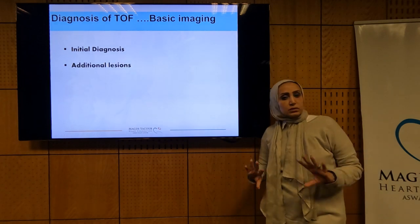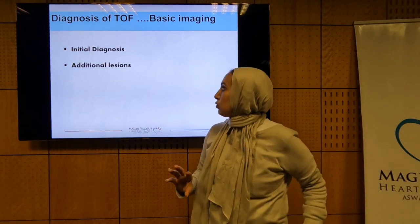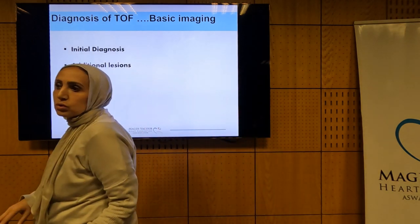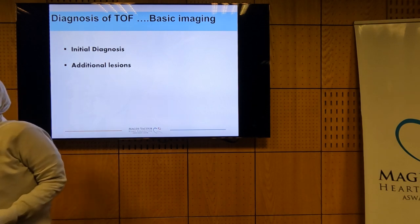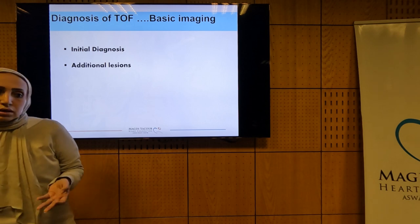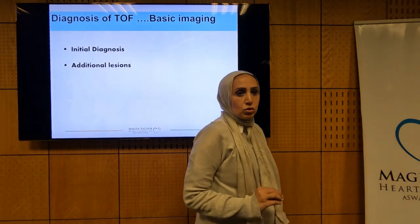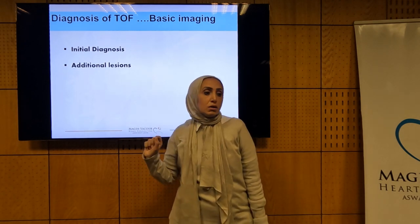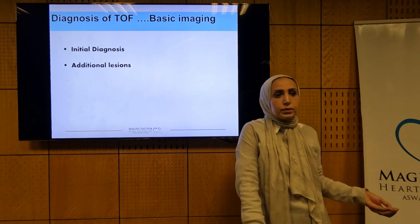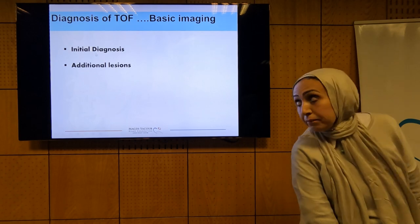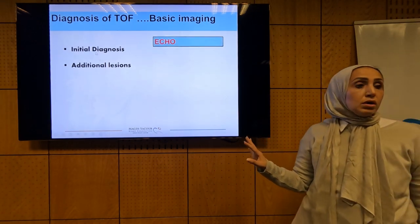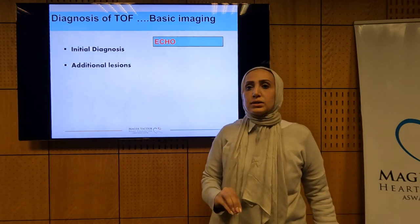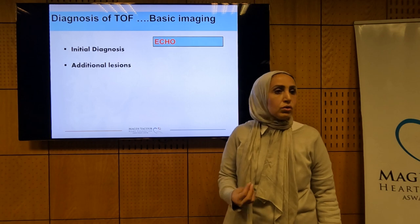Now moving to how to diagnose Tetralogy of Fallot. The initial diagnosis requires demonstrating the anterocephalic deviation of the conal septum, the overriding of the aorta, the RVH, and the level of obstruction. The initial diagnosis is usually done by echo, which is more than enough. It is very uncommon to send the patient for cross-imaging or catheterization just to coin the diagnosis of Tetralogy of Fallot.